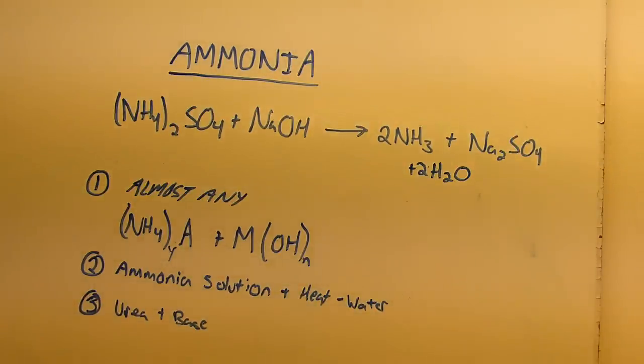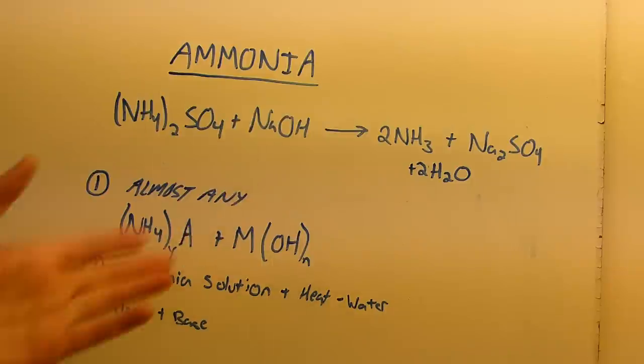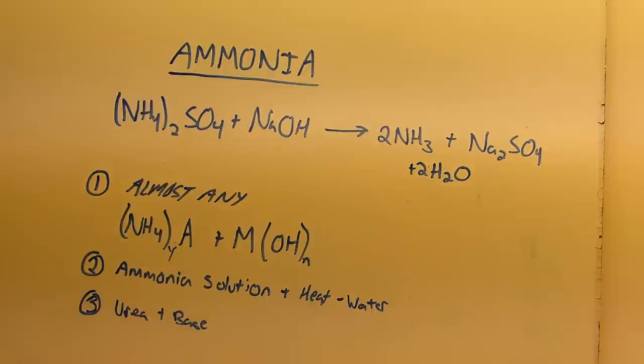The third method, and I will touch on this briefly, I've used this method before, and the problem is I can never really get it to work well. You use a base and urea. I've got urea, it's sold as a fertilizer. It's extremely cheap. In fact, it's cheaper than ammonium sulfate. You mix it with something like sodium hydroxide, and it starts evolving ammonia.